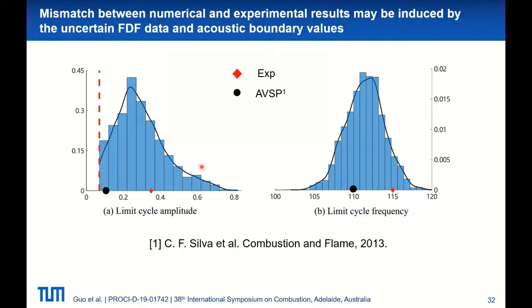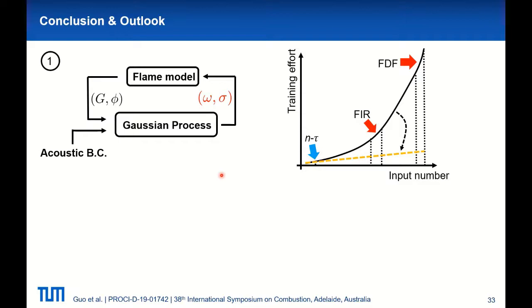Also shown in the figures are the experimentally measured limit cycle amplitude and frequency, as well as the numerical results predicted by AVSP from that paper. We see that both AVSP results and experimental results are covered by the predicted distribution. Therefore, we could argue that this mismatch may be attributed to the uncertain FDF data and acoustic boundary values.